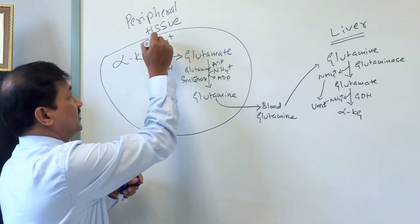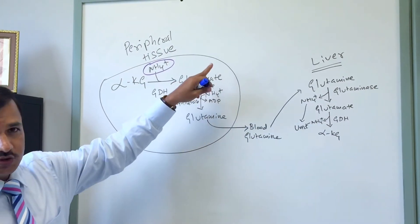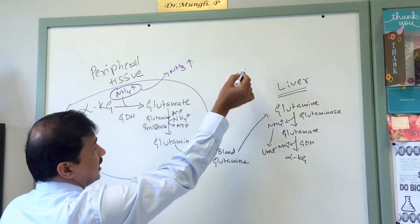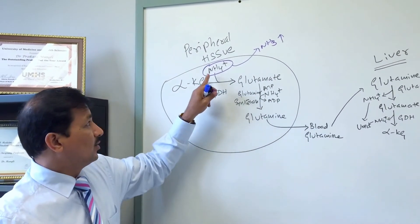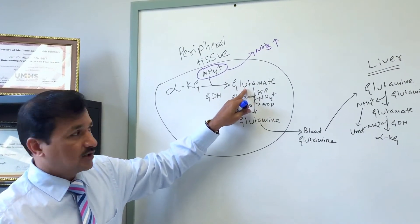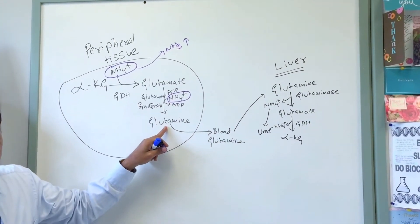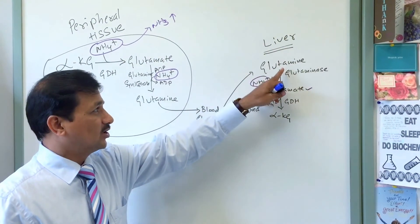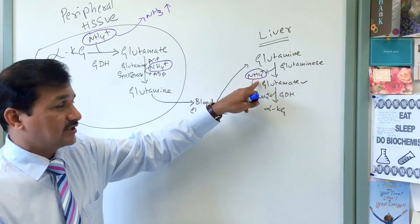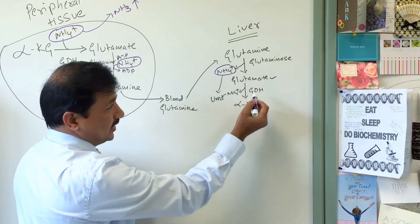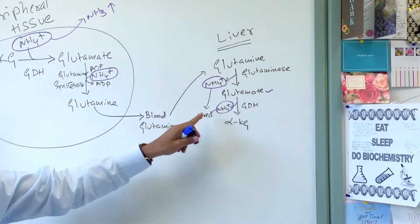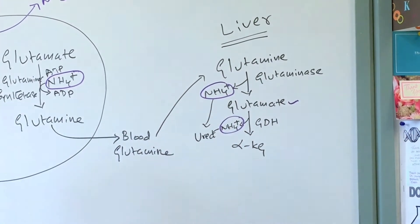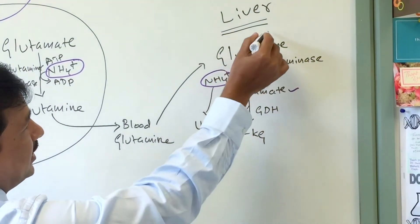If peripheral tissue ammonium ion is not fixed, it can enter the blood as ammonia (NH3), which is a neurotoxic molecule. That is why ammonium ion is fixed to alpha-ketoglutarate to make glutamate, and glutamate fixes one more ammonium ion to become glutamine. The glutamine enters the blood, is taken up by the liver, broken down by glutaminase and glutamate dehydrogenase, and both ammonium ions enter urea formation. Urea is then secreted by the liver into the blood.